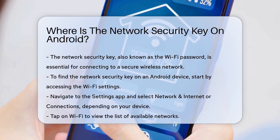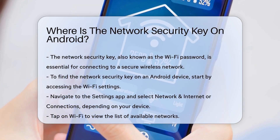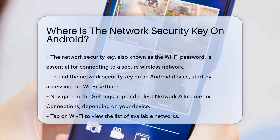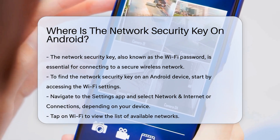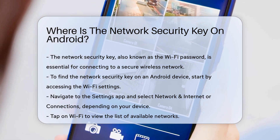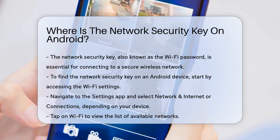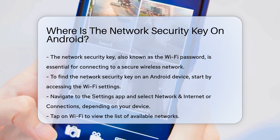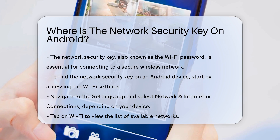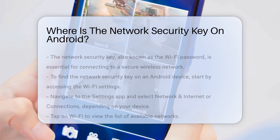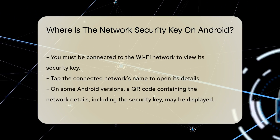Firstly, you need to access the Wi-Fi settings on your Android phone. This can be done by navigating to the Settings app and selecting Network and Internet, or Connections depending on your device. Once there, tap on Wi-Fi to view the list of available networks.